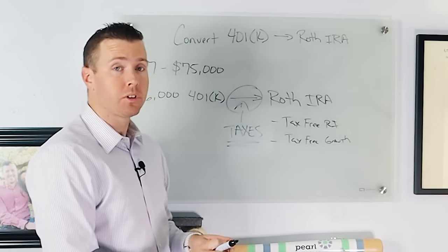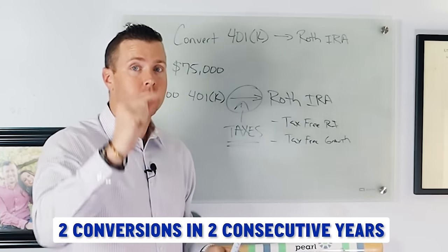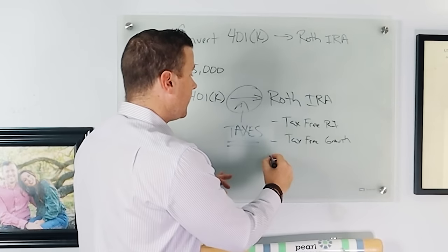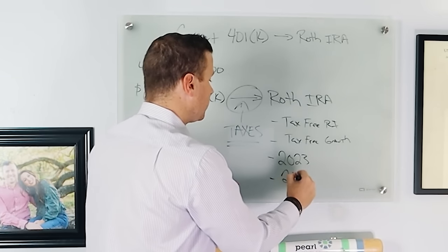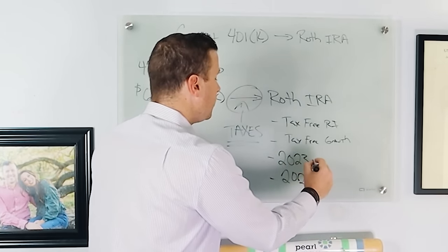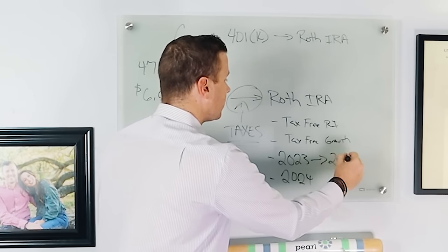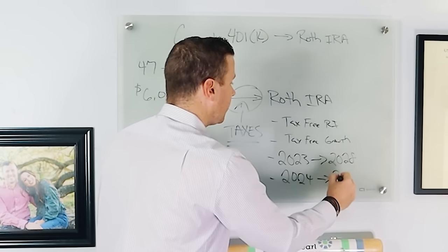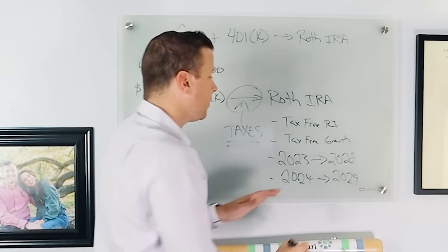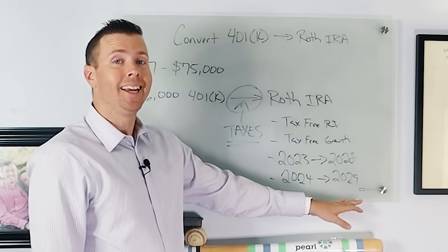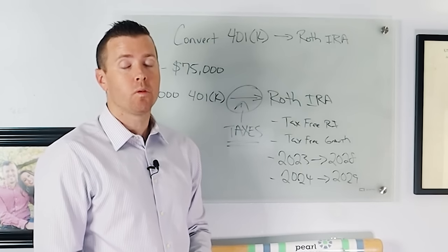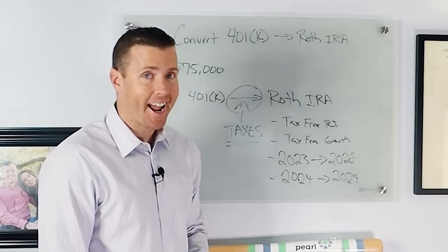So if this person did two conversions in two consecutive years, so let's say they did a conversion in 2023 and a conversion in 2024, you would have to wait five years for each conversion before you could use that for tax-free retirement income. And oh wait, you also must be over age 59 and a half.